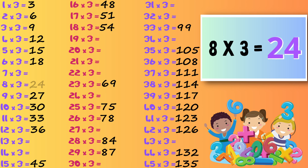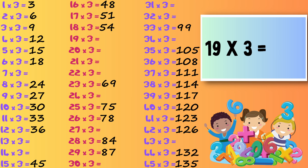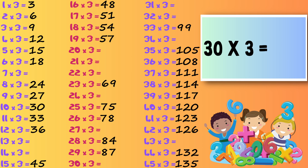Thirty-six times three — fifty-seven. Thirty times three — ninety.